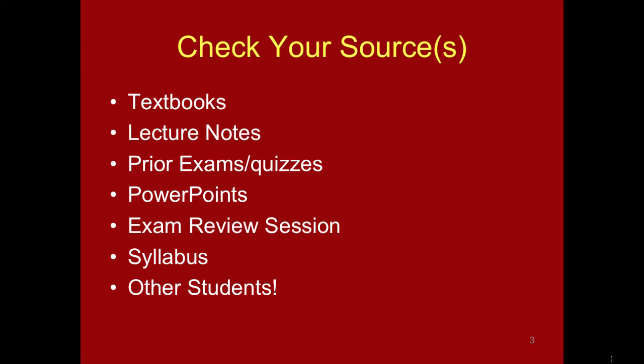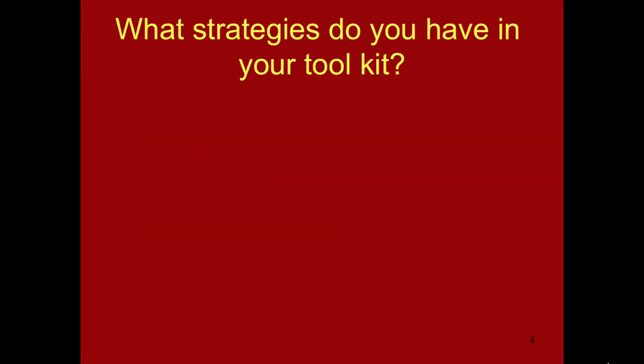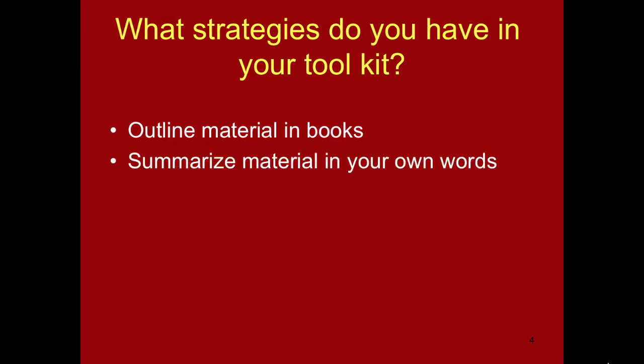This list represents a lot of sources to pull information from. So once we're ready to study, how do we even begin to know where to start? This is why we need strategies. When studying, we want to focus on pulling important ideas and concepts from our sources in order to organize and elaborate on them. Outlining material in books can be a helpful way to pull key concepts, preventing you from having to go back to the book, which can be overwhelming for your working memory. Summarizing information in your own words is also beneficial because we have to make sense of something before we can put it in our own words.